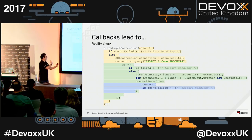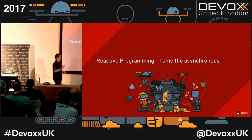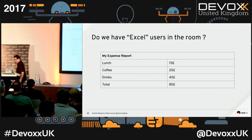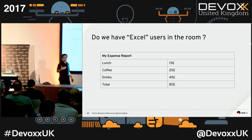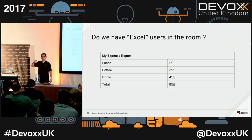We're going to see the second reactive thing: reactive programming. Do we have people using Excel, Google Spreadsheet, or Apple Numbers? Those people are the true experts of reactive programming — they don't know it yet, but we're going to explain them.